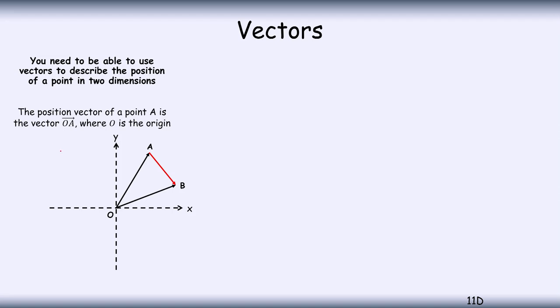Now if you want to find the vector AB, we can write that. AB is equal to—to get from A to B, I can travel back down this vector OA, so that's negative OA, and then travel up here to get to B, so that's plus OB.